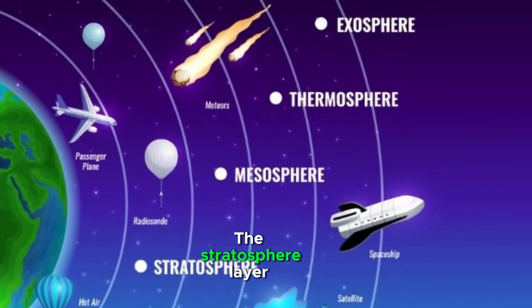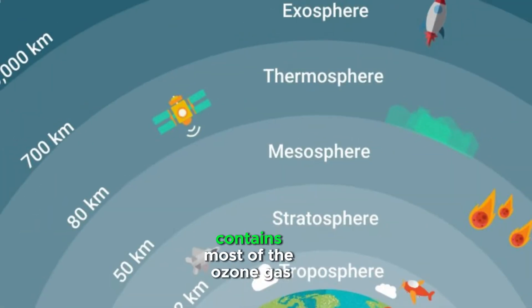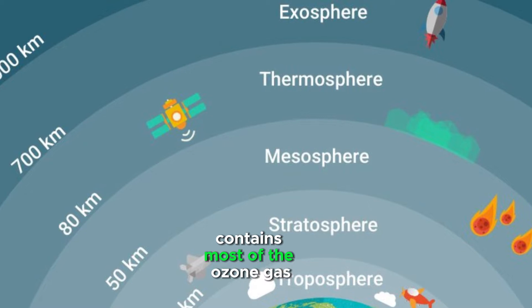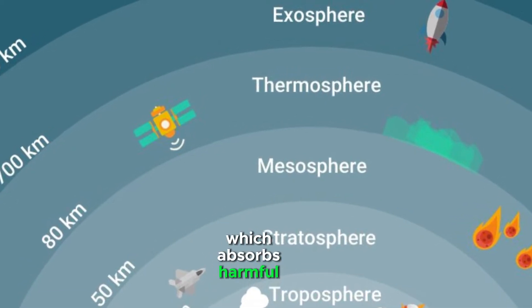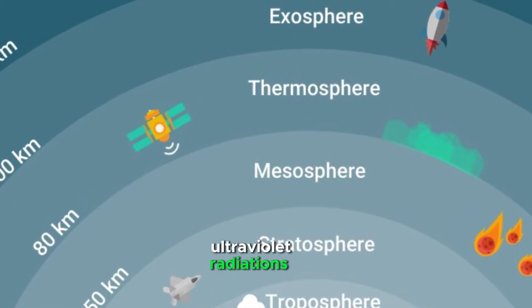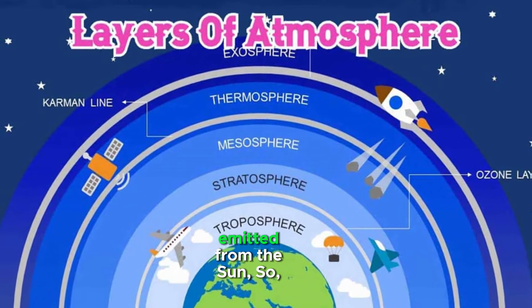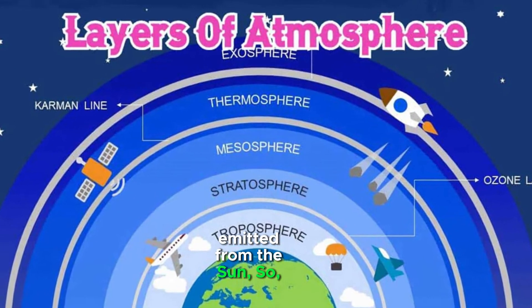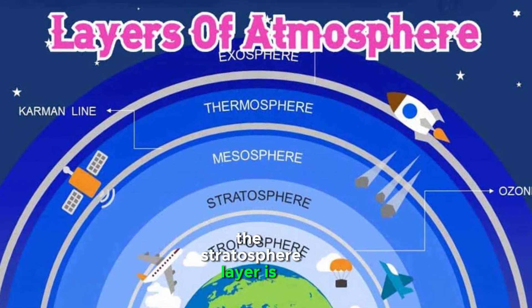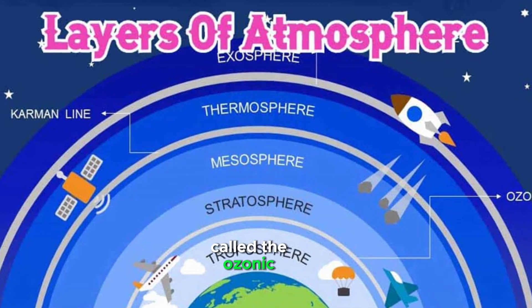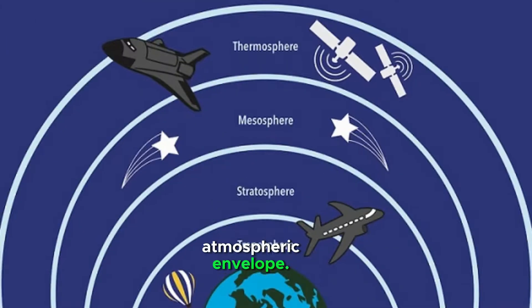The stratosphere layer contains most of the ozone gas, which absorbs harmful ultraviolet radiations emitted from the sun. So, the stratosphere layer is called the ozonic atmospheric envelope.